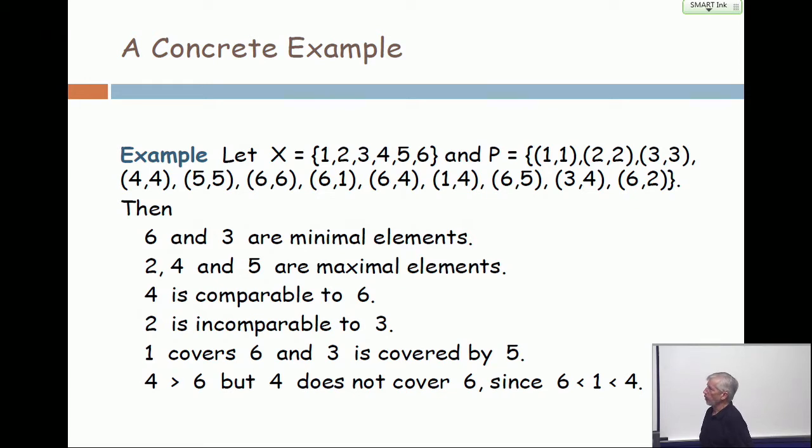You can tell from this that four is comparable to six. Yes? In fact, who's less than whom? Six is less than four. But four is comparable to six because one of them is less than the other. Two is incomparable to three. Because you can't find a 2-3 or a 3-2 in the list.